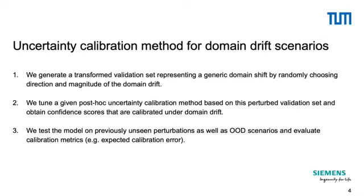In the second step, we tune a given post-hoc uncertainty calibration method based on this perturbed validation set, and obtain confidence scores that are calibrated under domain drift. All in all, we simulate domain drift scenarios and use the resulting perturbed validation set to tune existing post-hoc uncertainty calibration methods. We hypothesize that this facilitates calibrated predictions of neural networks under domain drift.